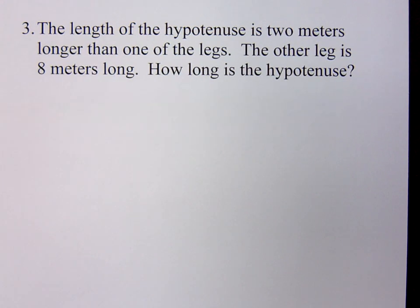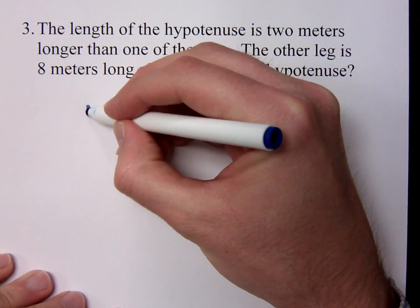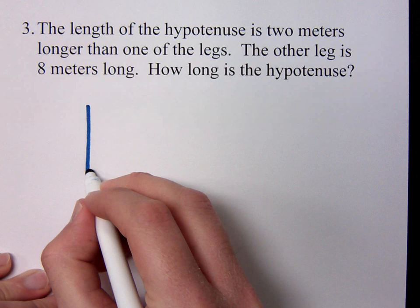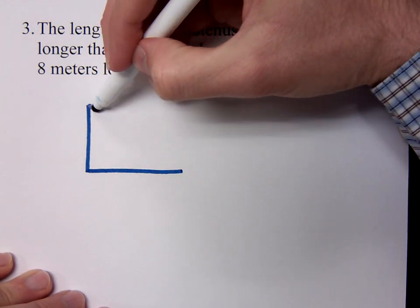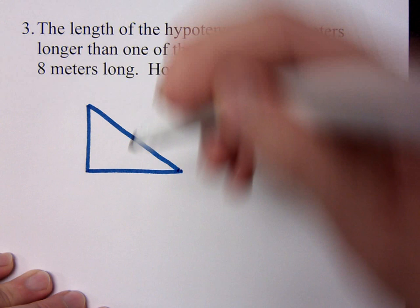I think what would be good for us to do here is to draw a diagram, draw a picture. Since I'm talking about a right triangle, and I know that I am because it's talking about the word hypotenuse, you're not going to have that unless you are talking about a right triangle.